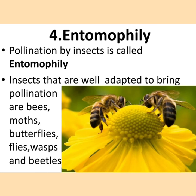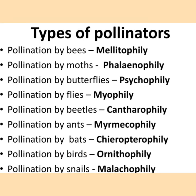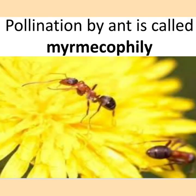What is entomophily? Pollination by insects is called entomophily. Insects that are well adapted to bring pollination are bees, moths, butterflies, flies, wasps, and beetles. The different types of pollinators and their names: pollination by bees is called melittophily, by moths is called phalaenophily, by butterflies is called psychophily, by flies is called myophily, by beetles is called cantharophily, by ants is called myrmecophily, by bats is called chiropterophily, by birds is called ornithophily, and by snails is called malacophily. Here you can see myrmecophily — the pollination by ants.